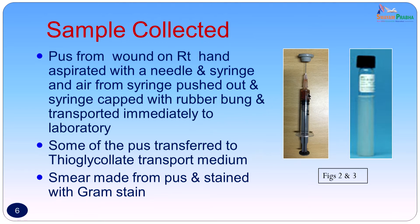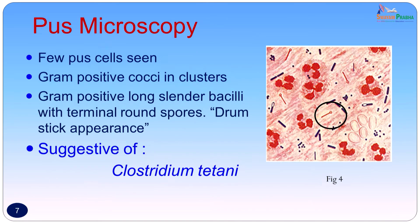Some of the pus was also transferred into a transport medium — thioglycolate transport medium. Smears were made from the pus and stained with the Gram stain. On Gram stain, a few pus cells were seen, an occasional Gram-positive coccus in cluster was seen, and Gram-positive long slender bacilli with terminal round spores were seen, giving a drumstick appearance. The morphology was suggestive of Clostridium tetani.